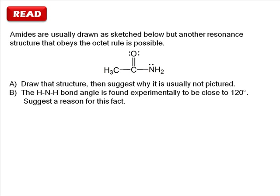For part A we are to draw the alternative and suggest why it's not usually shown. Then part B asks us to explain why the angle between the two hydrogen atoms and the nitrogen atom is found experimentally to be close to 120 degrees. In other words, why is the geometry around nitrogen approximately trigonal planar?